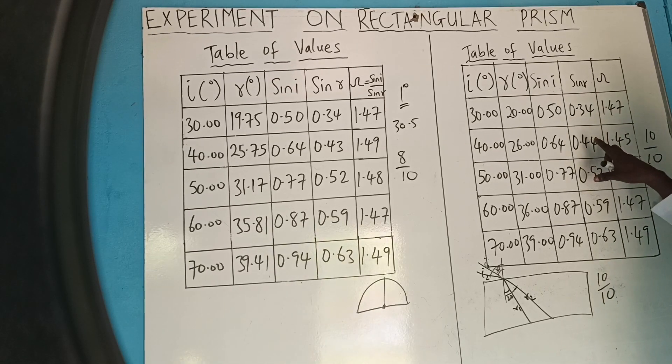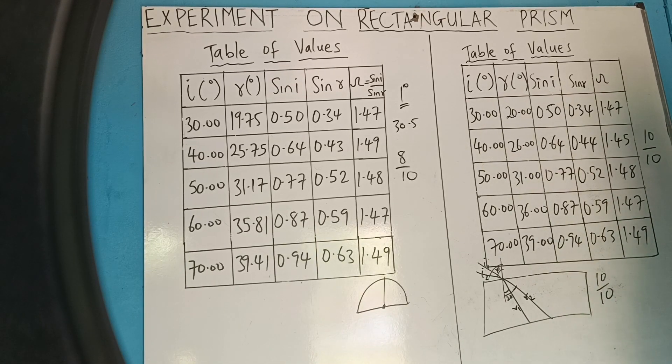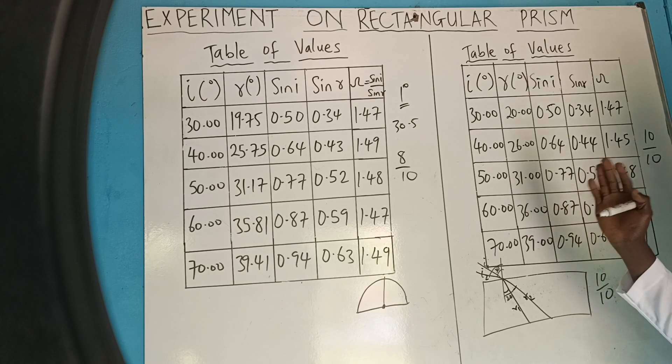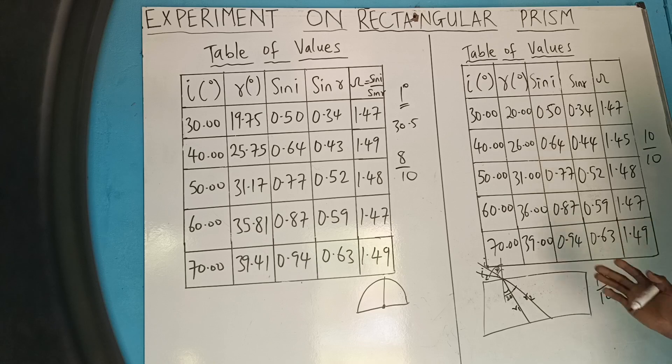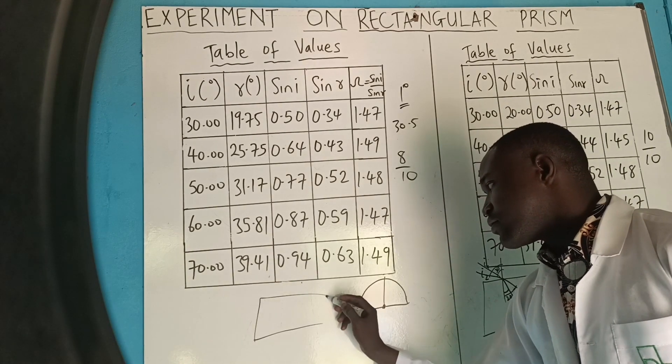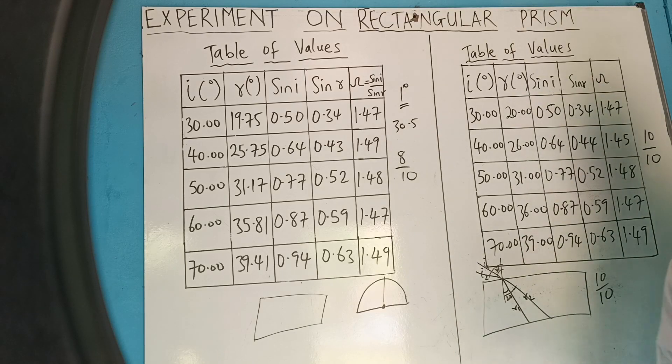Get mark for your table, and get mark for all the calculations you did as well. So that is how to conclude the experiment on rectangular prism. The one that goes this way. Okay? So thanks for watching the video.